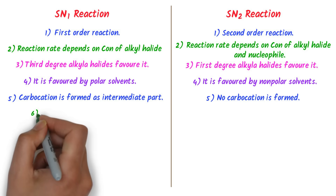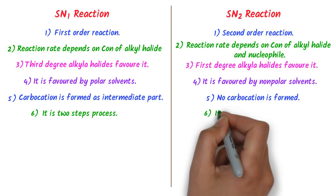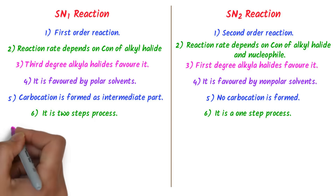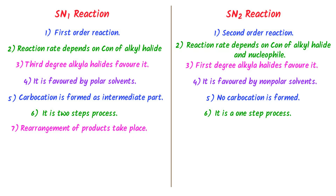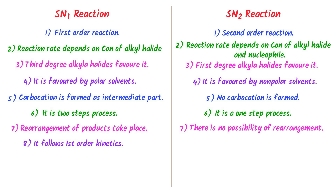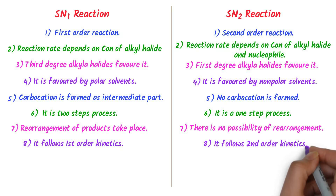Sixthly, SN1 is a two-step process, while SN2 is a one-step process. Seventhly, in SN1 rearrangement of products takes place, while in SN2 there is no possibility of rearrangement. Eighthly, SN1 reactions follow first-order kinetics, while SN2 reactions follow second-order kinetics.